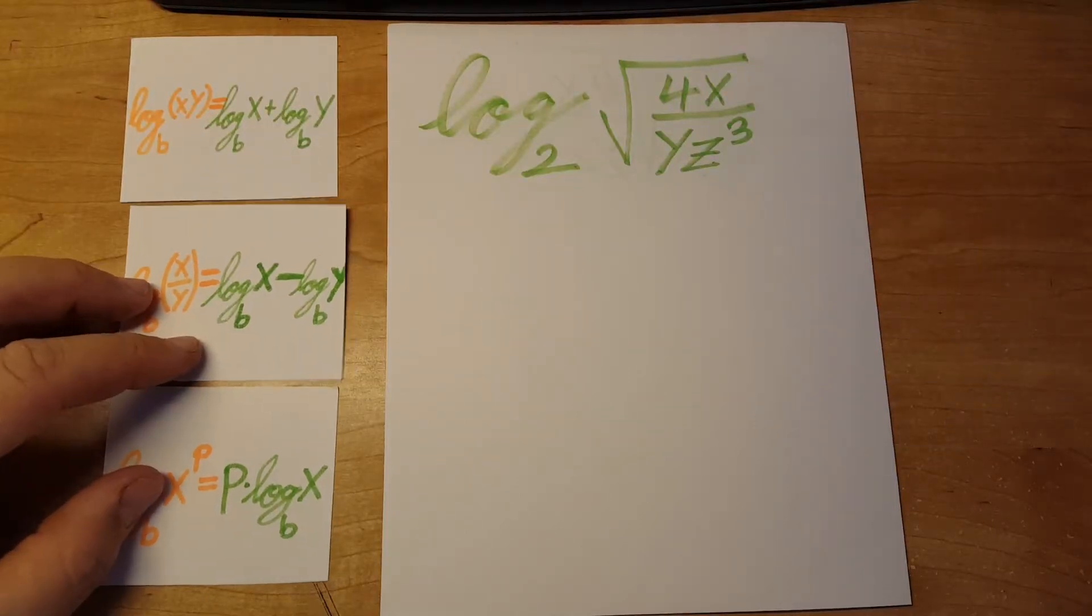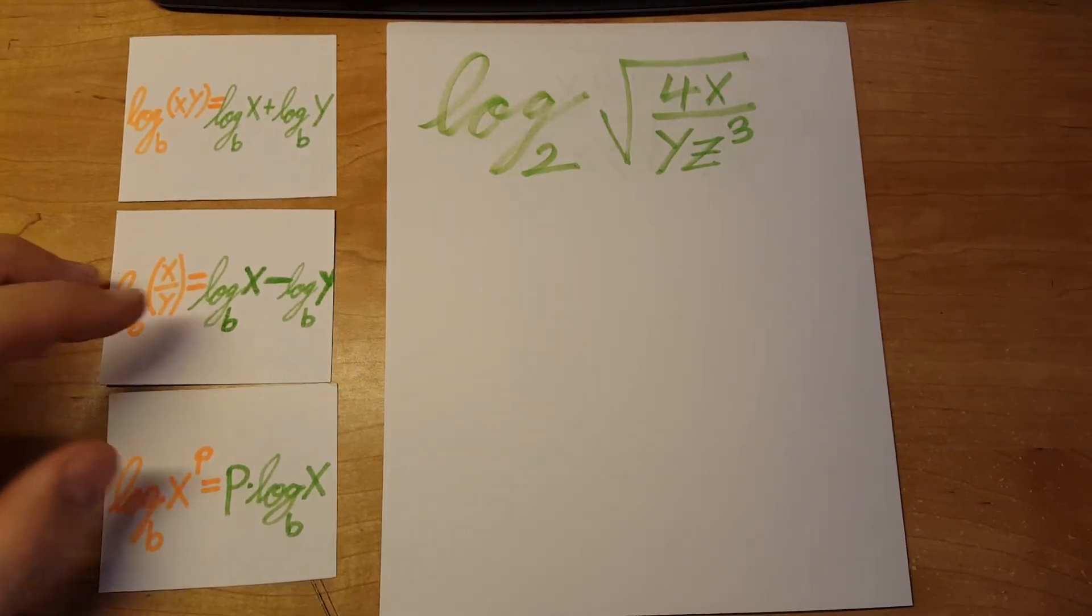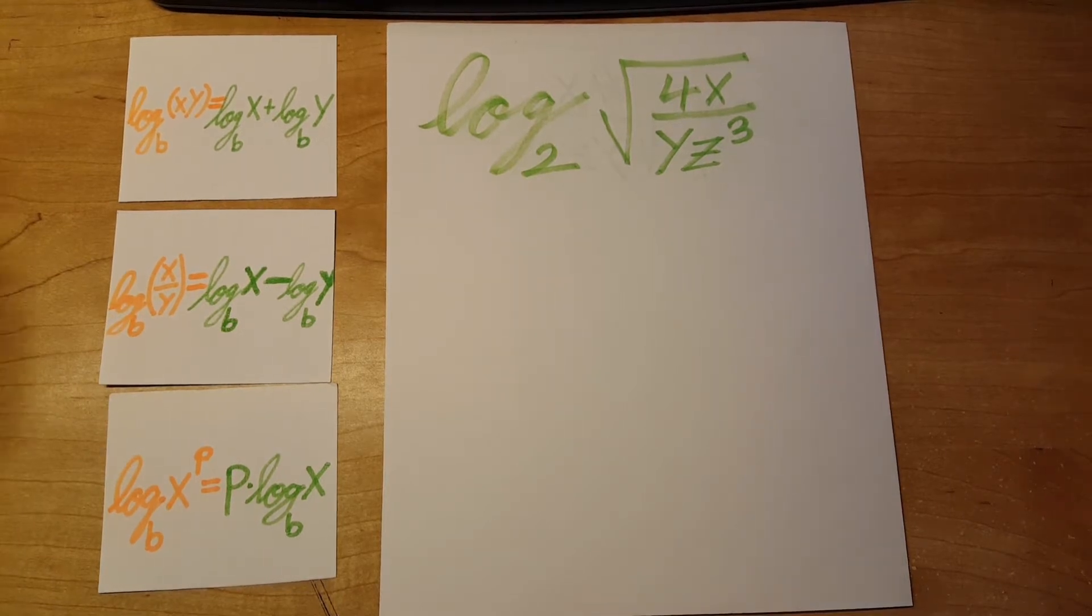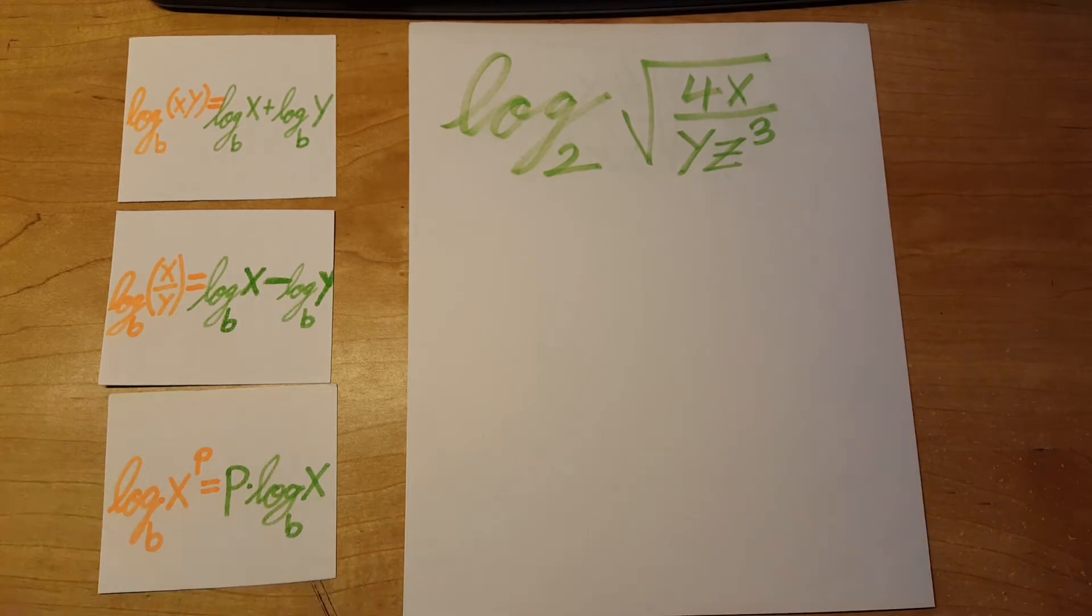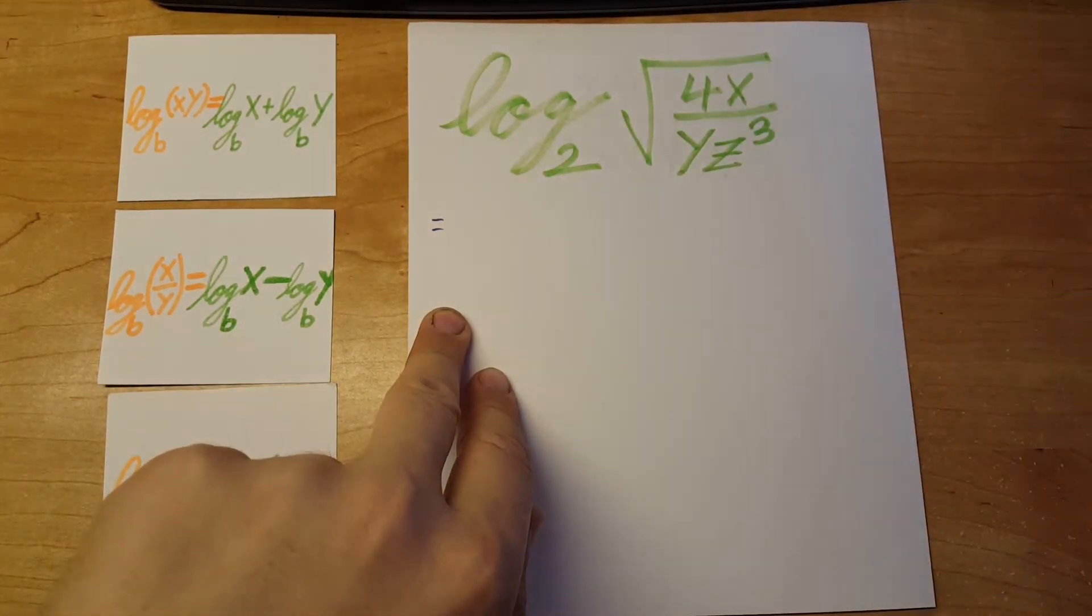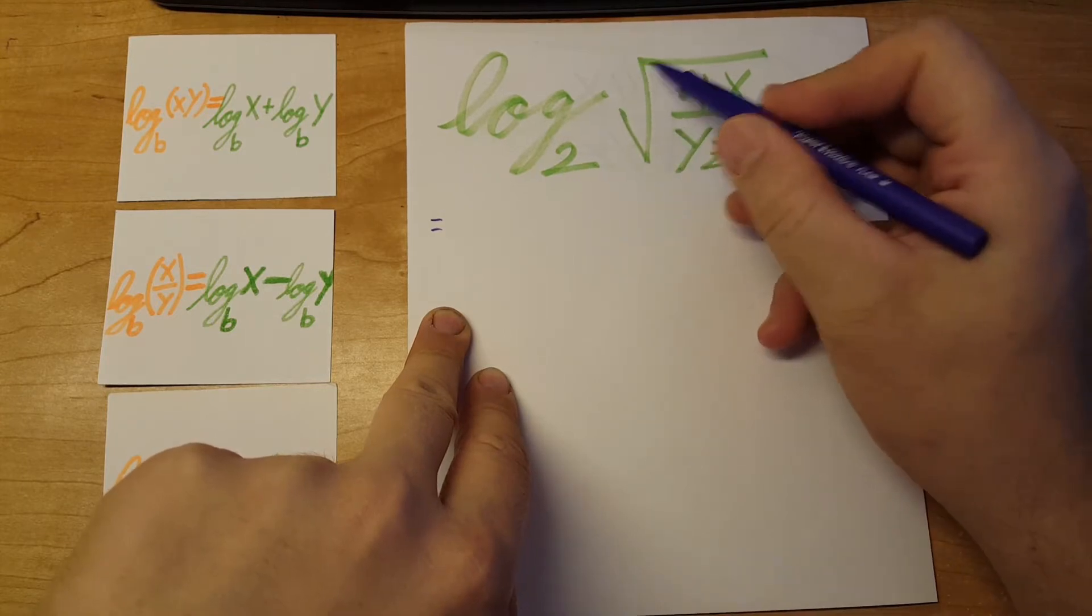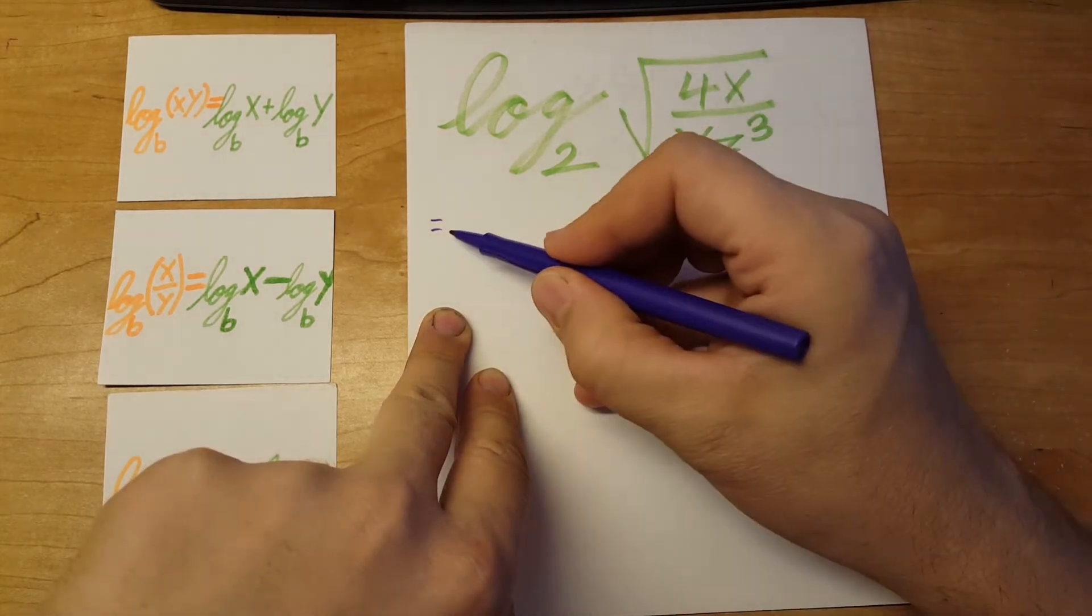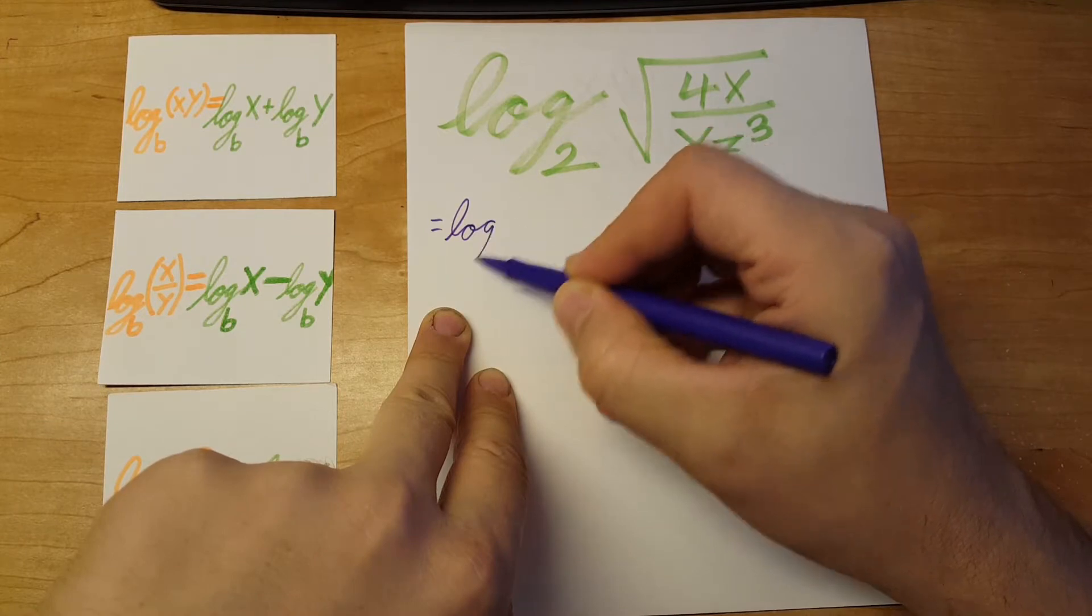We have a logarithm and we're asked to simplify it. We're going to use pretty much all these properties and it's going to be quite long. First of all, let's turn this into an exponent.